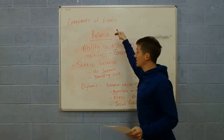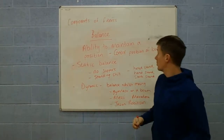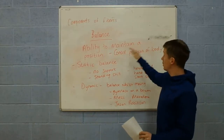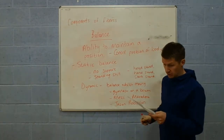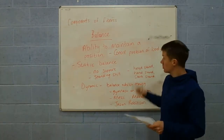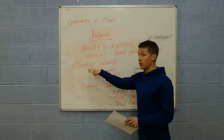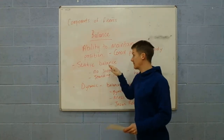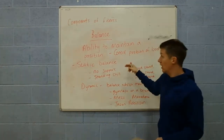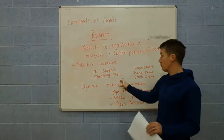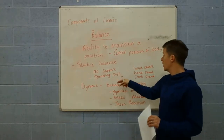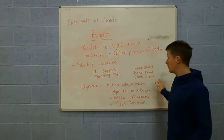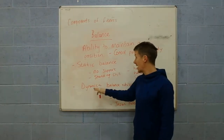The next component of fitness is balance — this is the athlete's ability to maintain and control the position of their body. There are two types. The first is static balance, where you have no support from any objects and you are standing still. This could be a headstand, handstand, or a stork stand, for example.